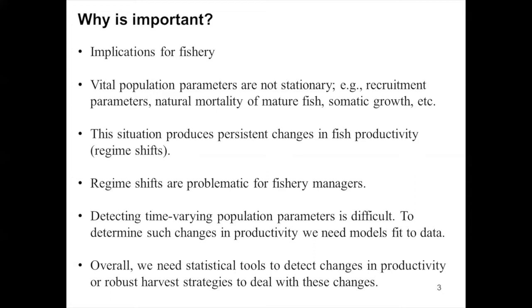Detecting time-varying population parameters requires a long time series of information and population models fit to data to infer these changes. Overall, there are two ways to deal with regime shifts. One option is to use a statistical tool to detect this change and react as soon as possible. A second option is to develop harvest strategies robust to regime shifts — strategies that balance acceptable yields and conservation goals regardless of the regime shift type.